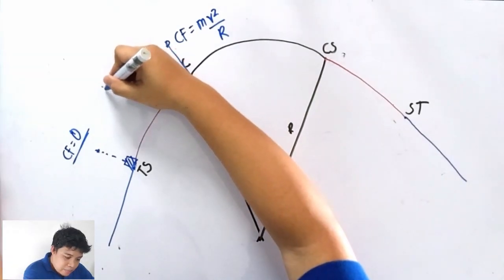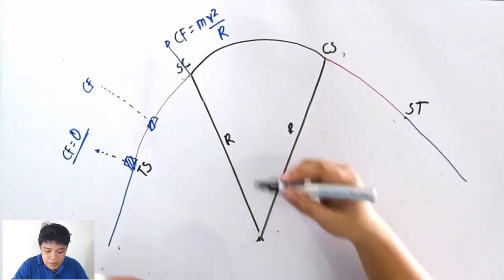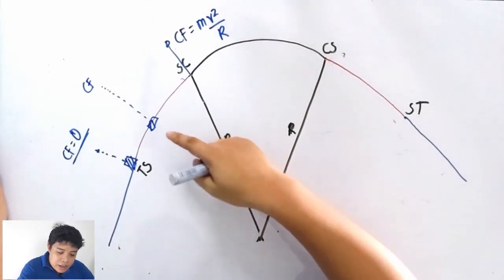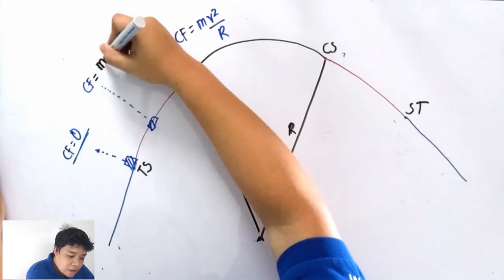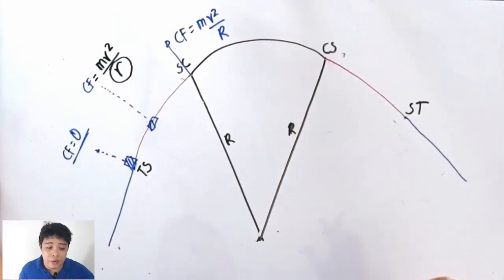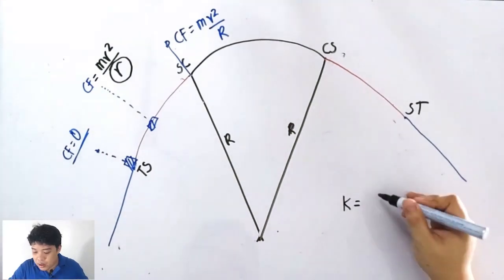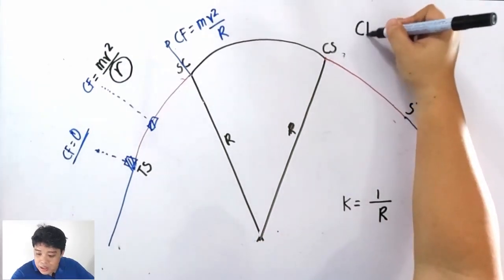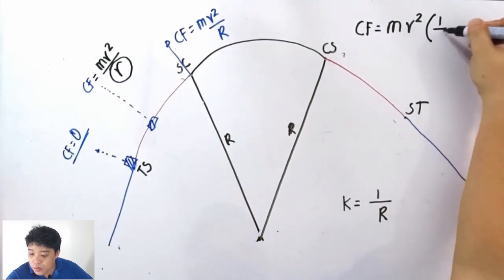To understand this, let us take a certain point along the transition spiral. Let capital R be the radius of curvature of the simple curve, and small r be the radius of curvature at any point in the spiral. The centrifugal force is mv² over r. To express it differently, I'll introduce the curvature k, which equals 1 over r. So the centrifugal force is equivalent to mass times v² times k.